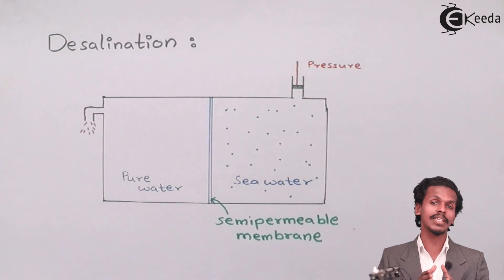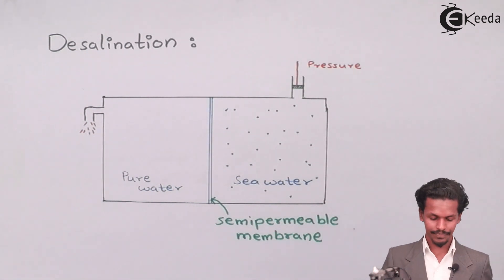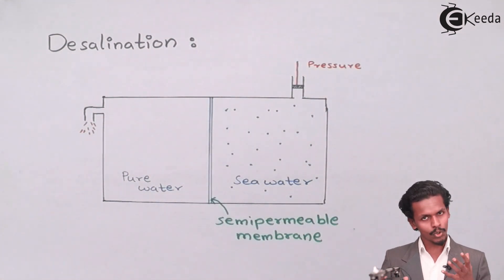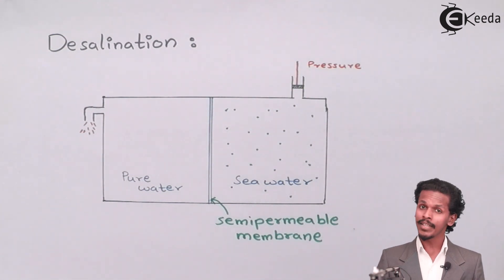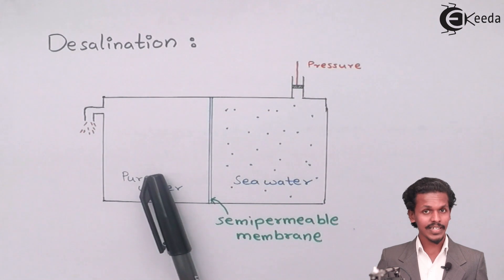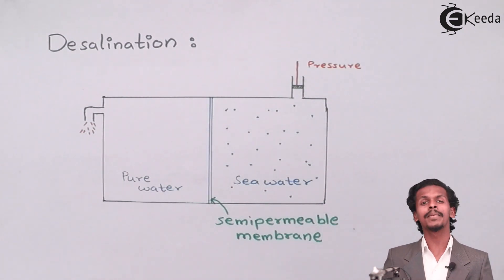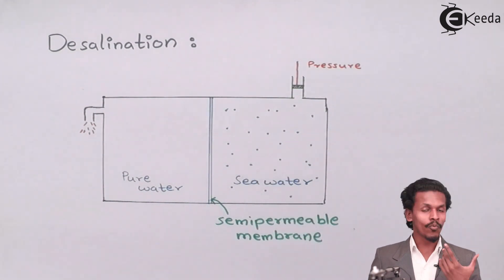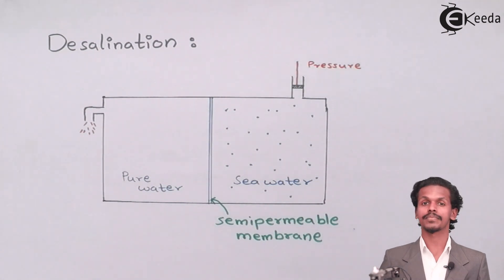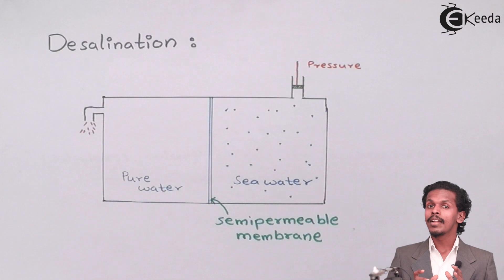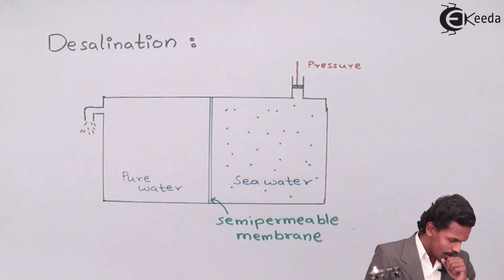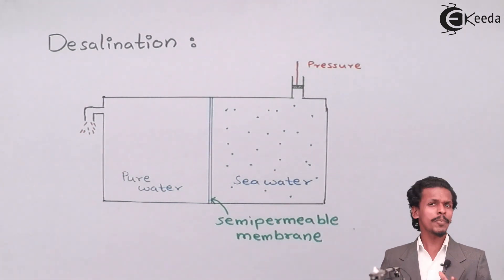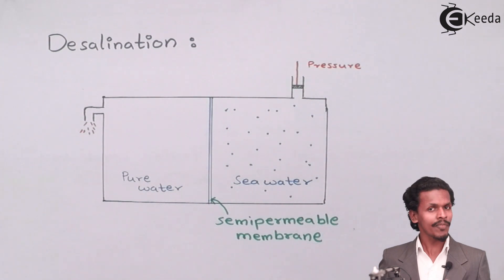Let me give an example using a diagram. I have drawn a diagram showing two chambers separated by a semi-permeable membrane. The chamber on the left side consists of pure water — the pure solvent — while the right one consists of sea water. As you know, sea water contains both water and salts.